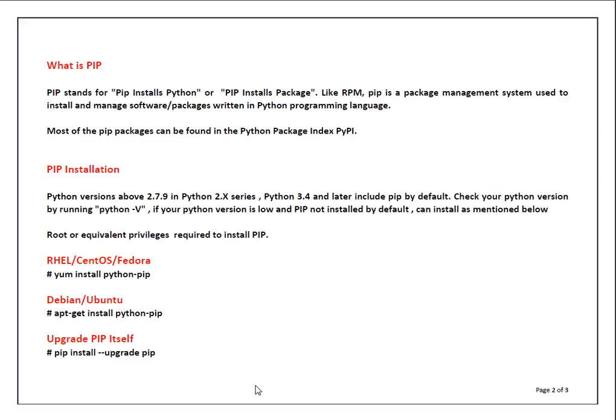To install pip, you need Python installed on your machine. Python versions above 2.7.9 in the Python 2.x series, or Python 3.4 and later, include pip by default — no need to install separately. You can check your Python version by running 'python -V'. If your version is lower and does not have pip by default, you can install pip manually. On Red Hat, CentOS, or Fedora run 'yum install python-pip'; on Debian or Ubuntu use 'apt-get install python-pip'. To upgrade pip itself, run 'pip install --upgrade pip'.